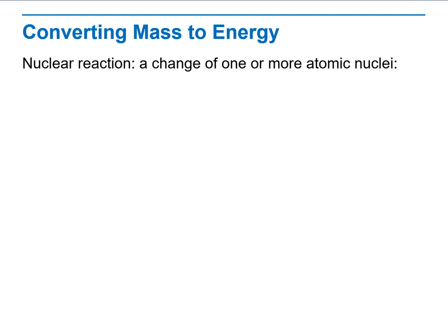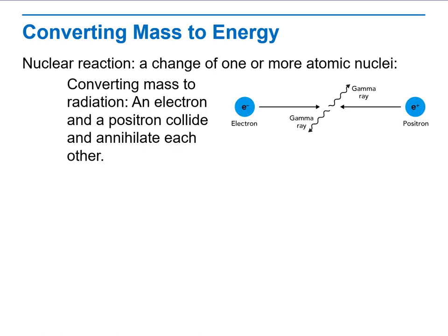First, we will define what a nuclear reaction is — a change of one or more atomic nuclei — and that the energy released during a nuclear reaction can take three forms: electromagnetic radiation, kinetic energy, and mass of particles.